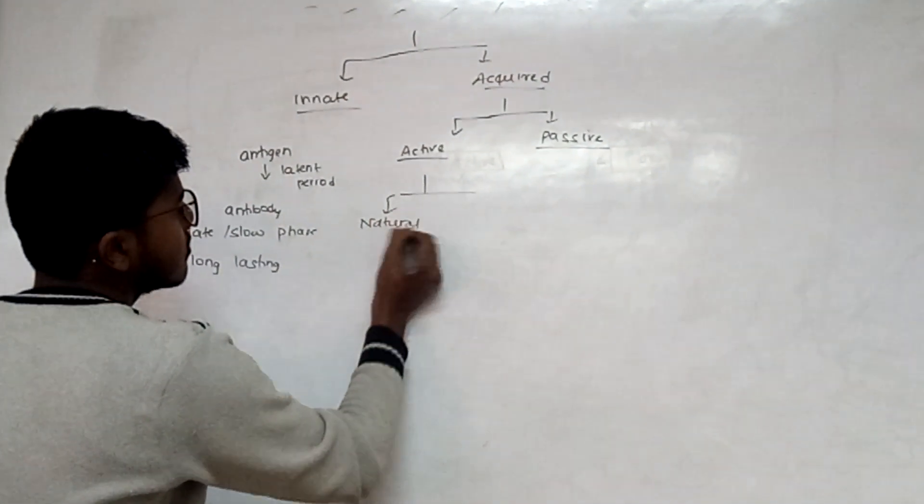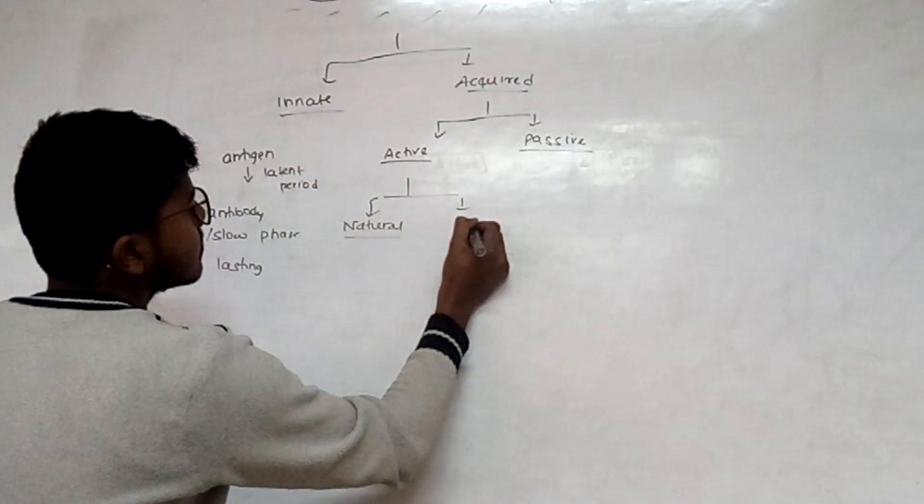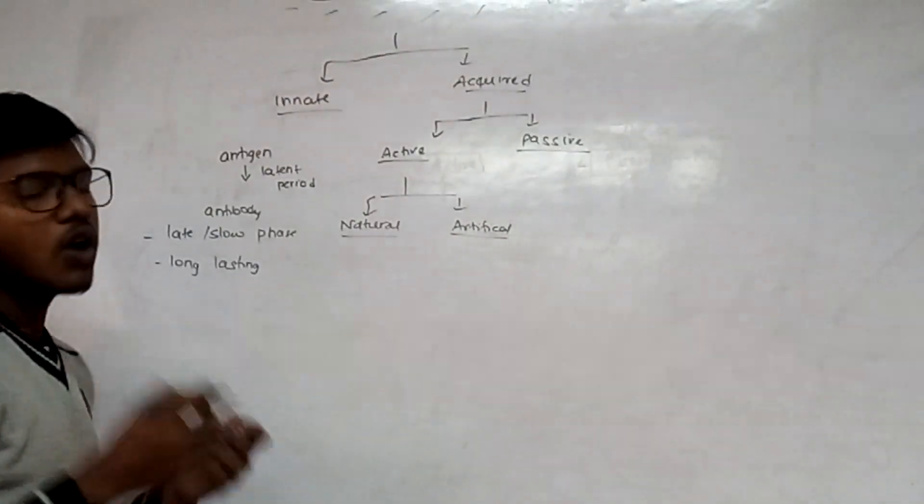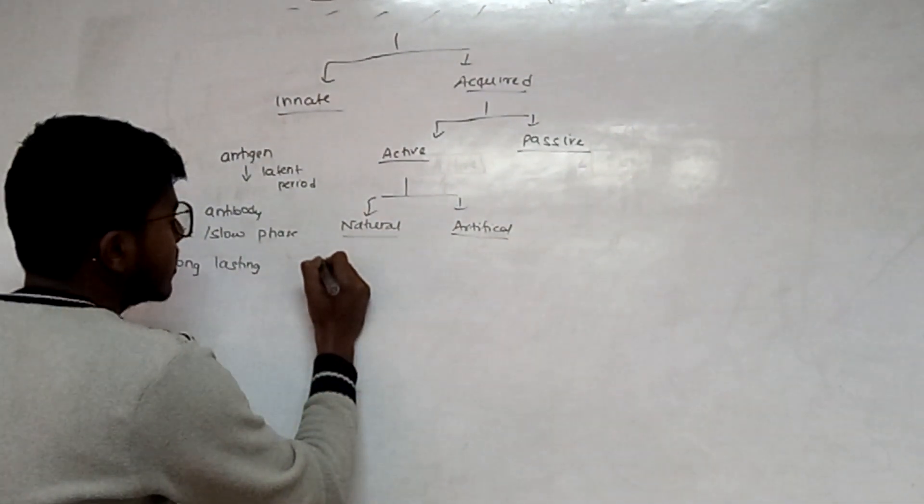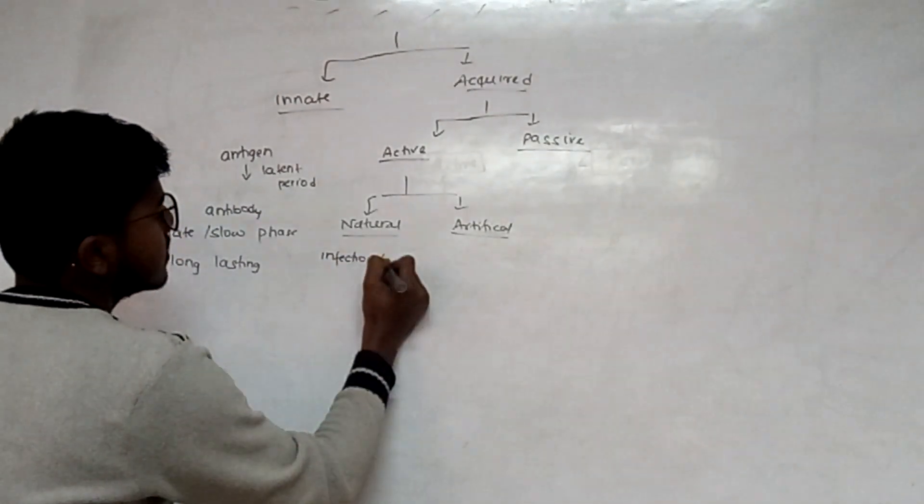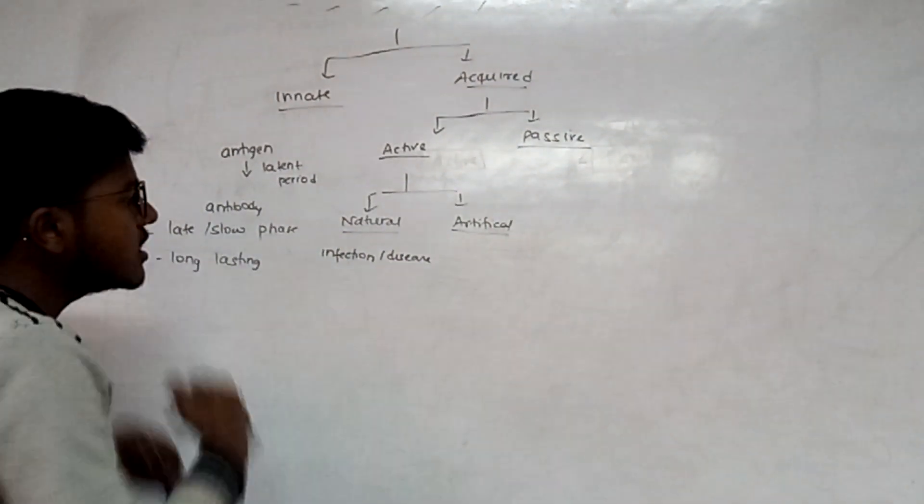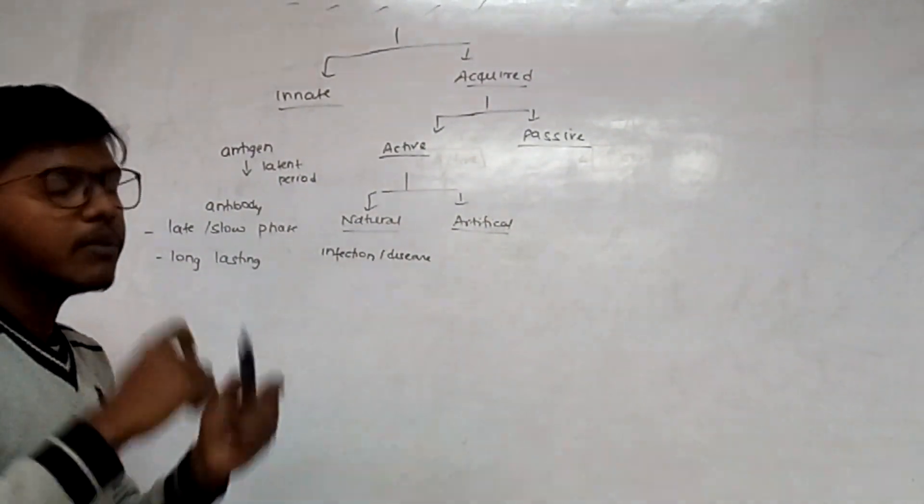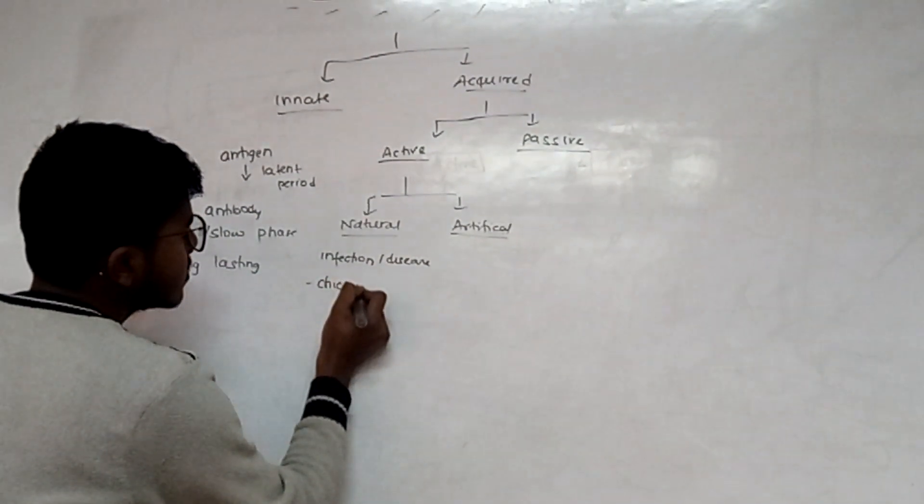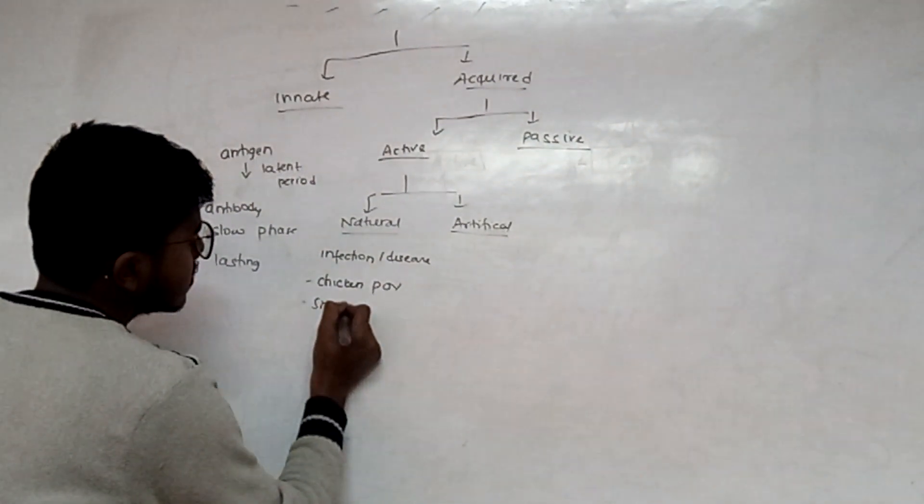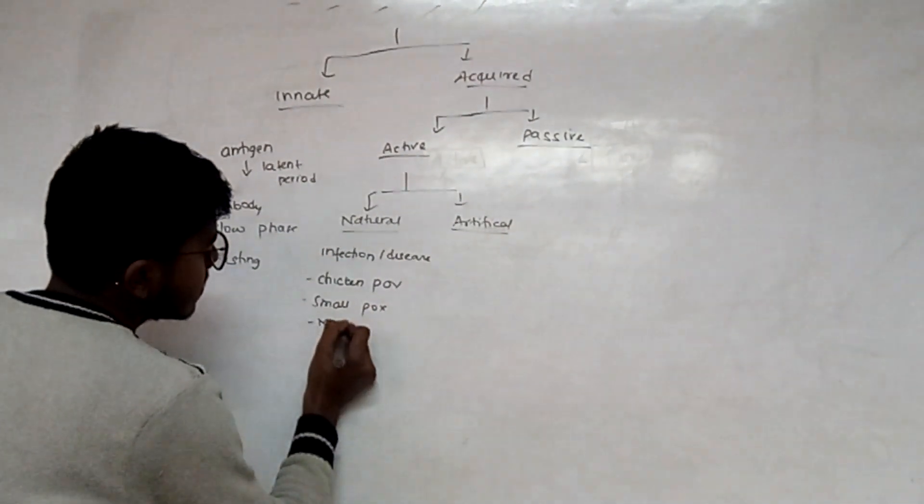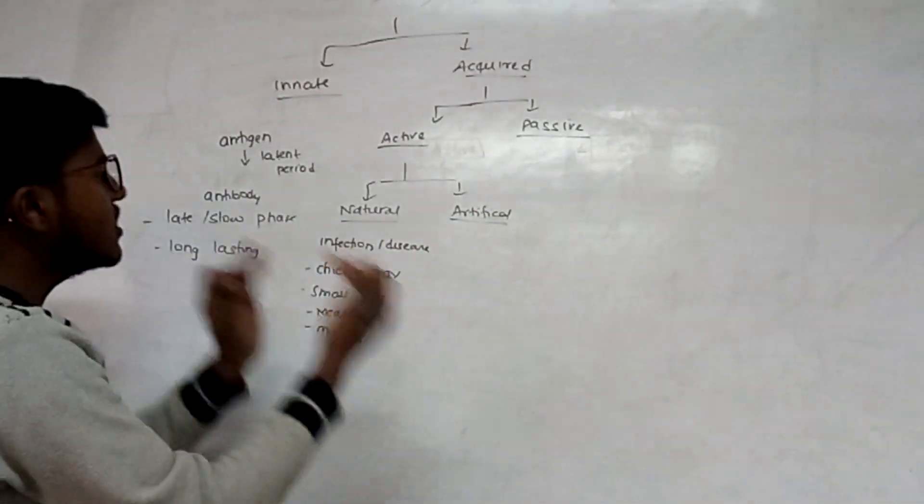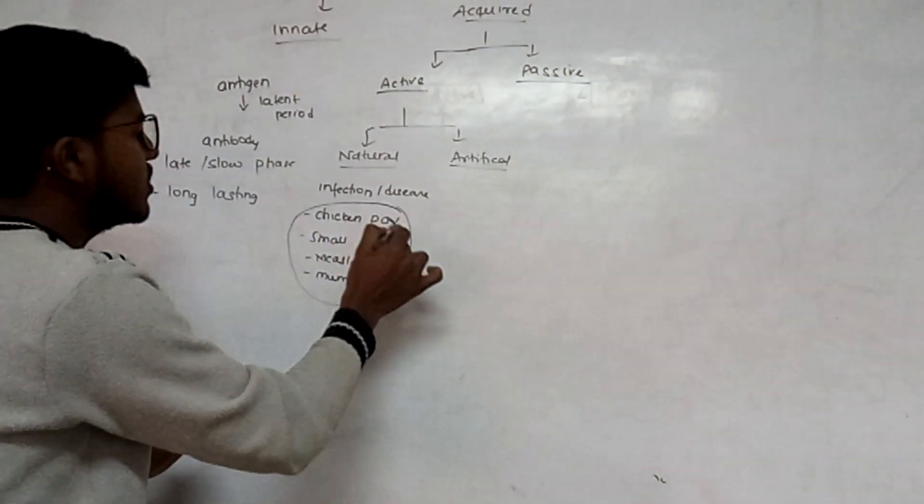It has two courses: natural and artificial. Naturally, we get antigen through infections or diseases. After the disease, our body will form antibody with memory response. In the case of chickenpox, smallpox, measles, and mumps, once we get these diseases, following these infections we cannot get affected a second time with the same infection.